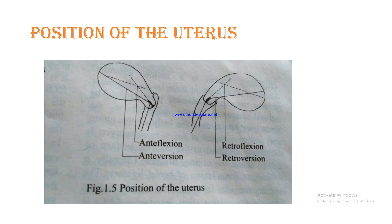The position of the uterus can be seen in the diagram showing anteflexion and anteversion — illustrating the angle of the uterus with the cervix and of the cervix with the vagina. Retroflexion and retroversion show a backward tilt of the uterus and its angle, with the uterus totally retroverted.